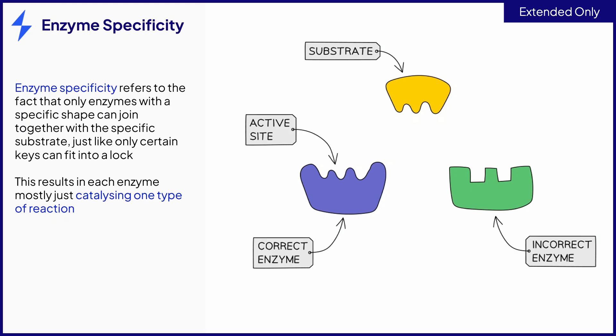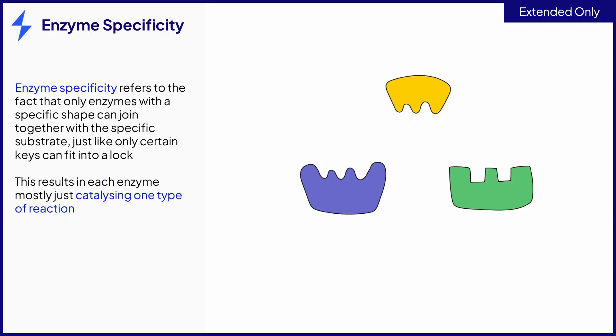The phrase enzyme specificity is an important keyword. It describes the fact that each enzyme can only catalyze reactions with the correct shaped substrate, such as only the correct shaped key would unlock each lock. This means that each enzyme usually only catalyzes one type of reaction.